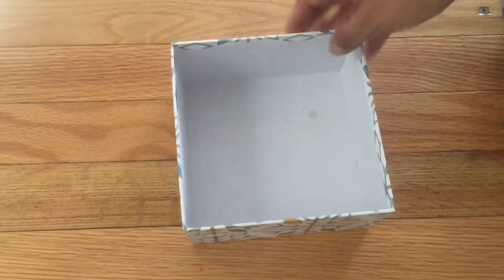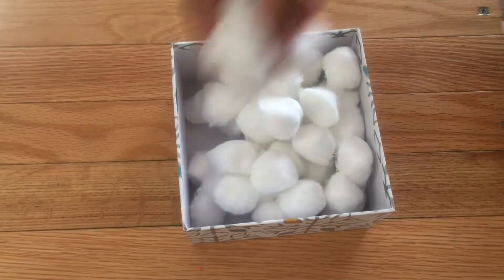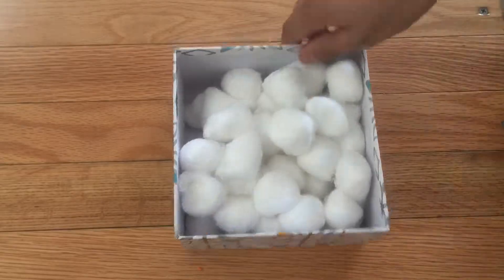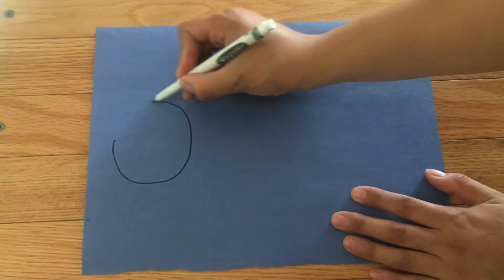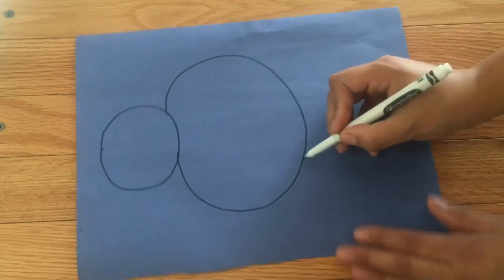I'm using this box to add our cotton balls, but you can use anything you have laying around or nothing at all. Now we will take our blue paper and draw our snowman.